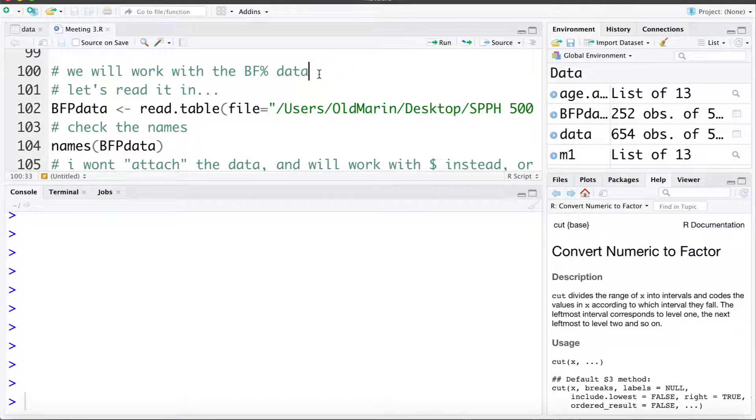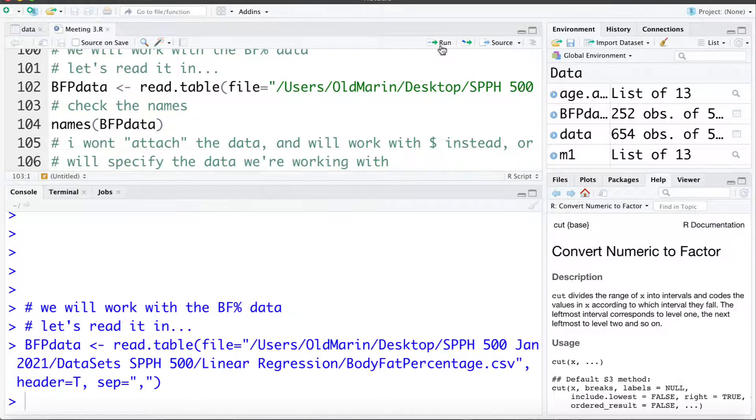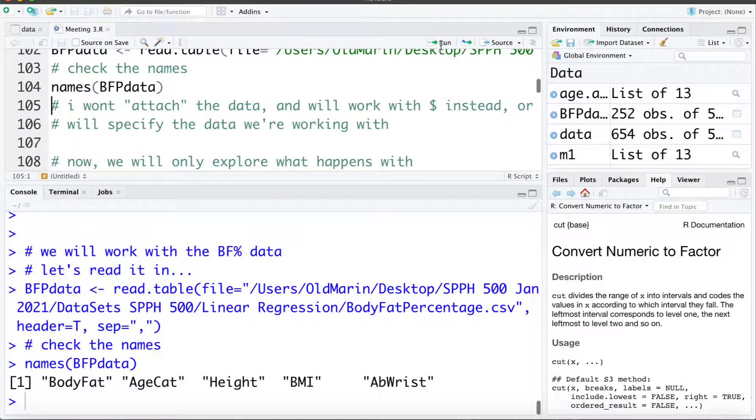To do so I'm going to work with this body fat percentage data. We've already encountered this earlier in another video and we're just going to repeat what we did there and go a little bit deeper. First I'm going to import this data and save it in something called BFP data. If we check the names of this data set we can see we have the body fat percentage,